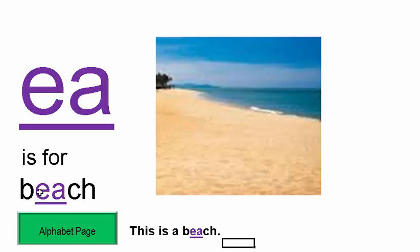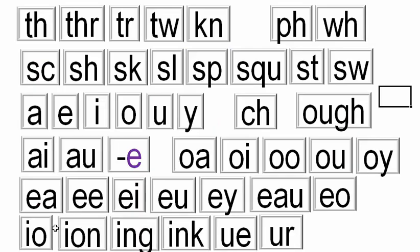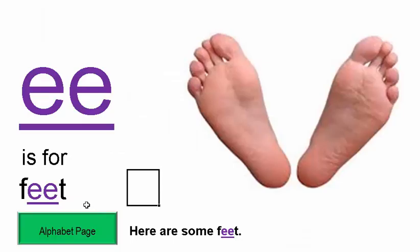EA is for BEACH — it makes the long E sound. This is a beach. EE is for FEET. Here are two feet.